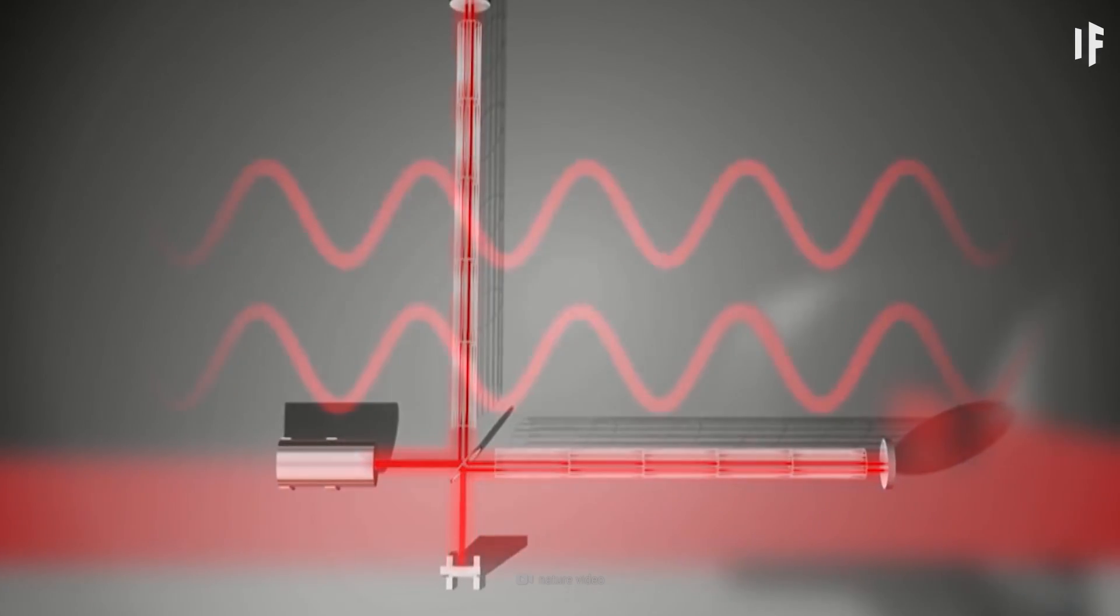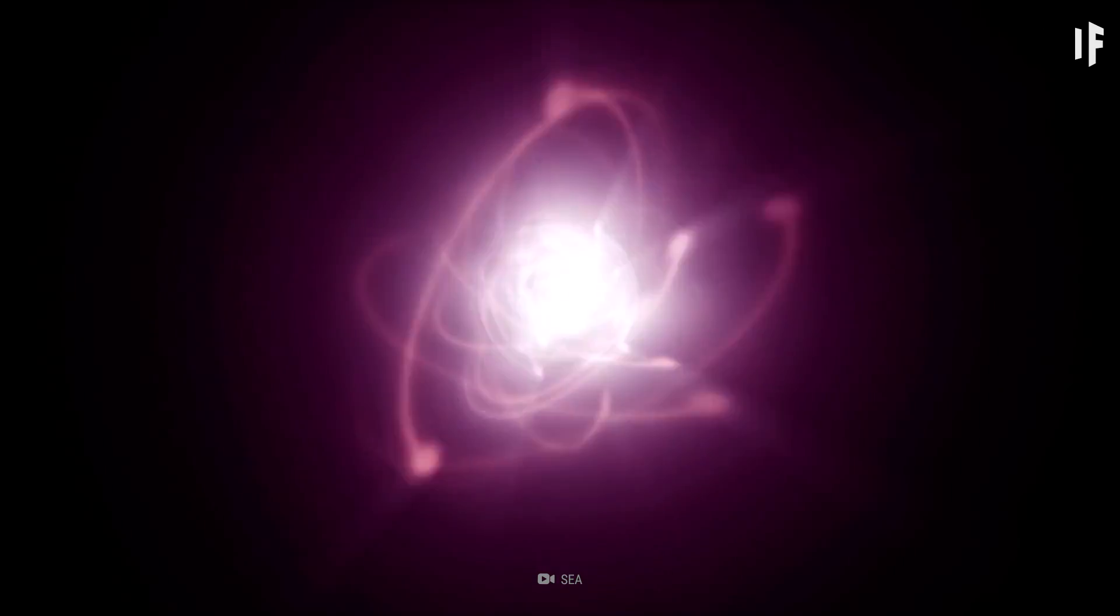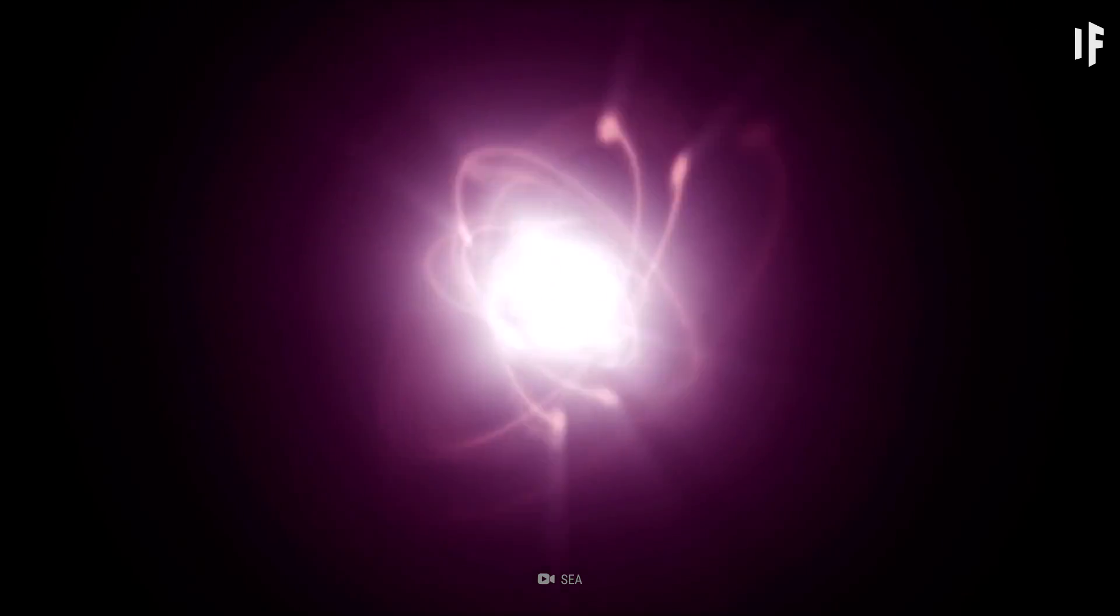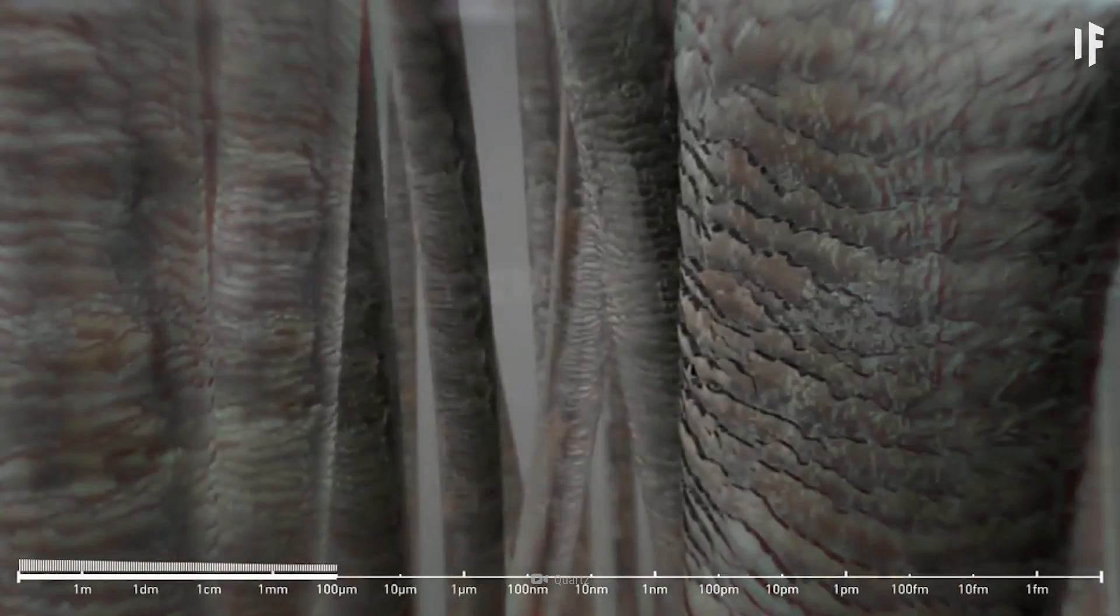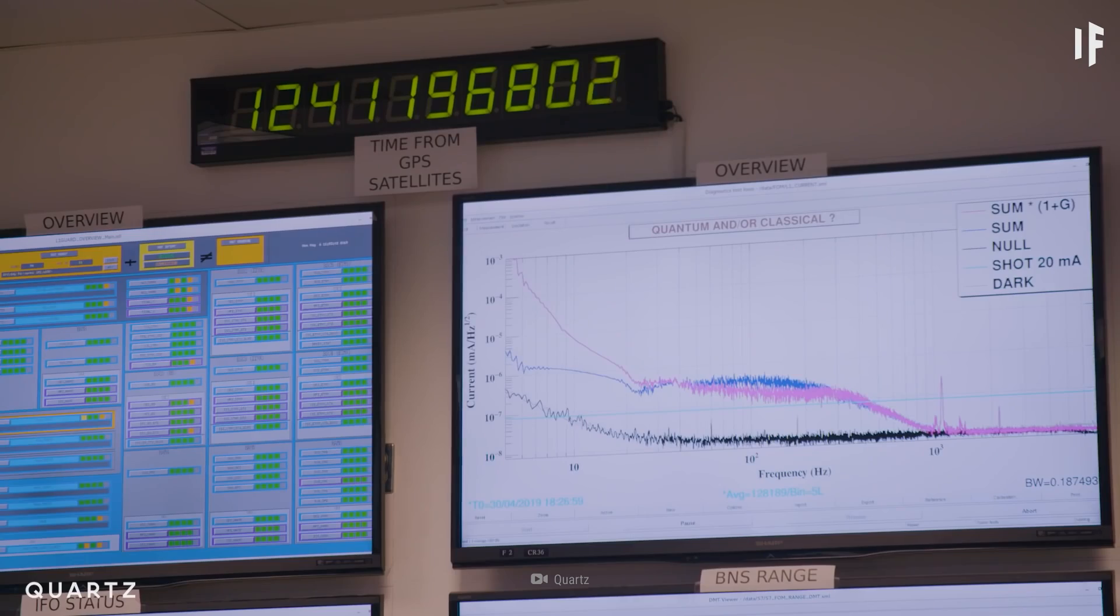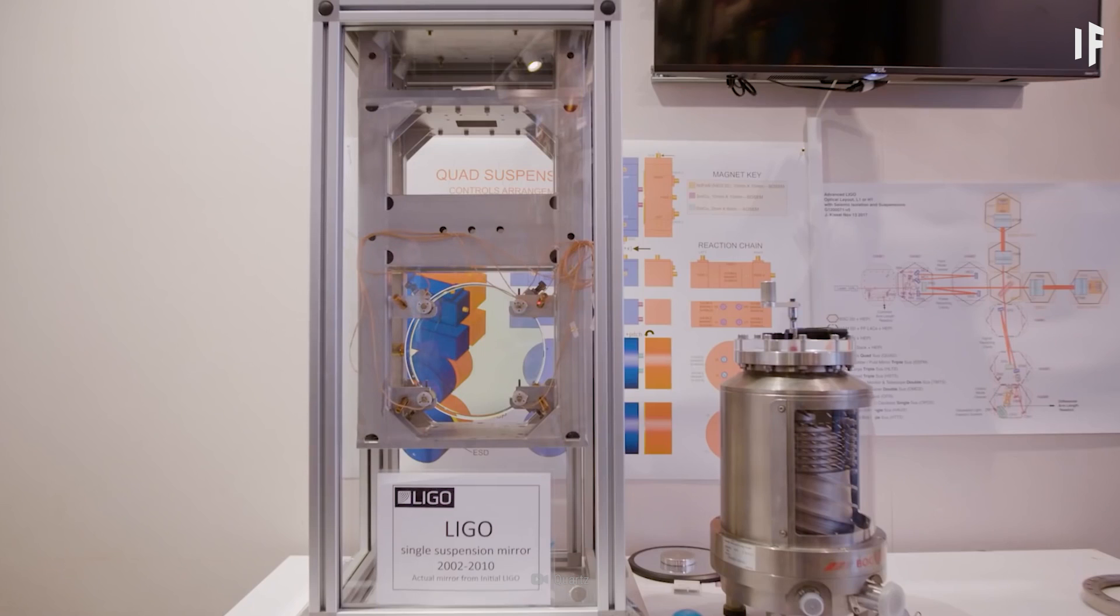Using laser interferometry, observatories can detect a change less than ten-thousandth the diameter of a proton. That's one million times smaller than the width of a human hair. Since then, LIGO has measured 50 detections of gravitational waves.